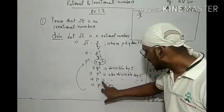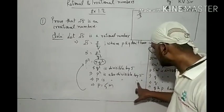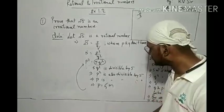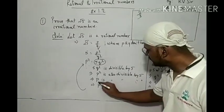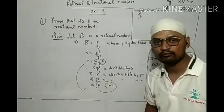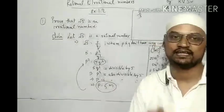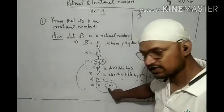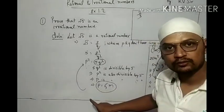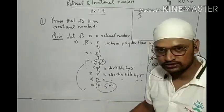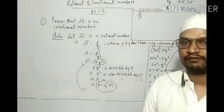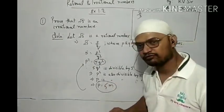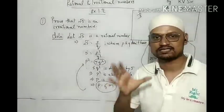Since p squared is divisible by 5, we can write p in the form p equals 5m. Because this number is divisible by 5, p can be written as 5m.